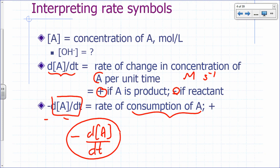If you're dealing with a product, then you just take the derivative of the product concentration with respect to time to get a positive number.